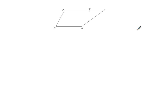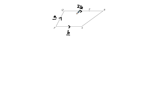Finally, Question 25 — we have a vector question with a trapezium. We're told that PS is parallel to QR, and QR is twice the length of PS. We know P to S is vector b, so Q to R will be 2b. P to Q is vector a. X is the point on QR such that QX is 3 parts and XR is 1 part.